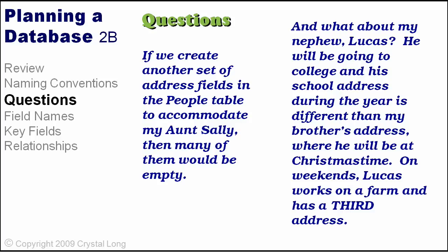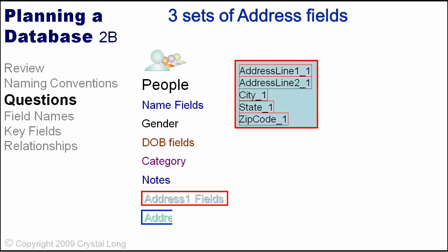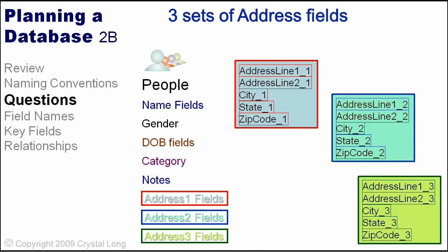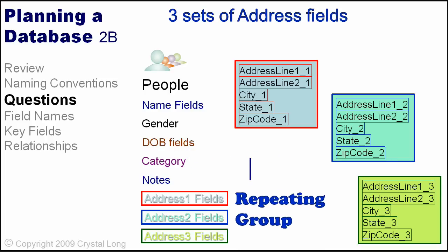Another option is to create two sets of address fields, but this creates another problem. If we want to print an address list, we would have a bunch of empty fields and would have to look in two places for the address. I would need three address sets to accommodate my nephew. This is called a repeating group, and it's against the rules of normalization.